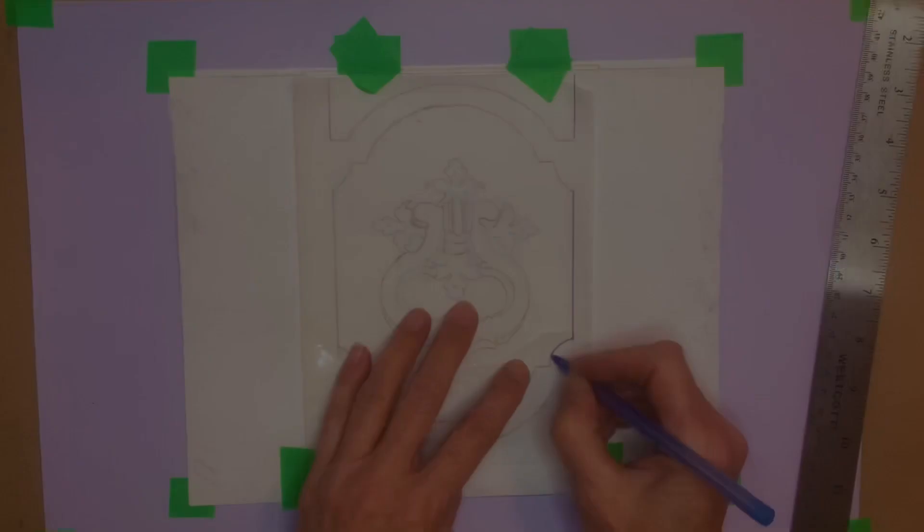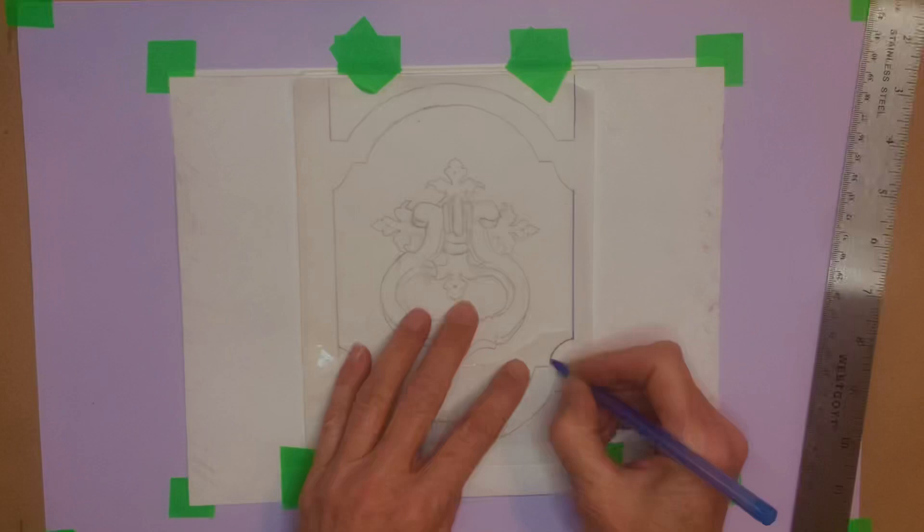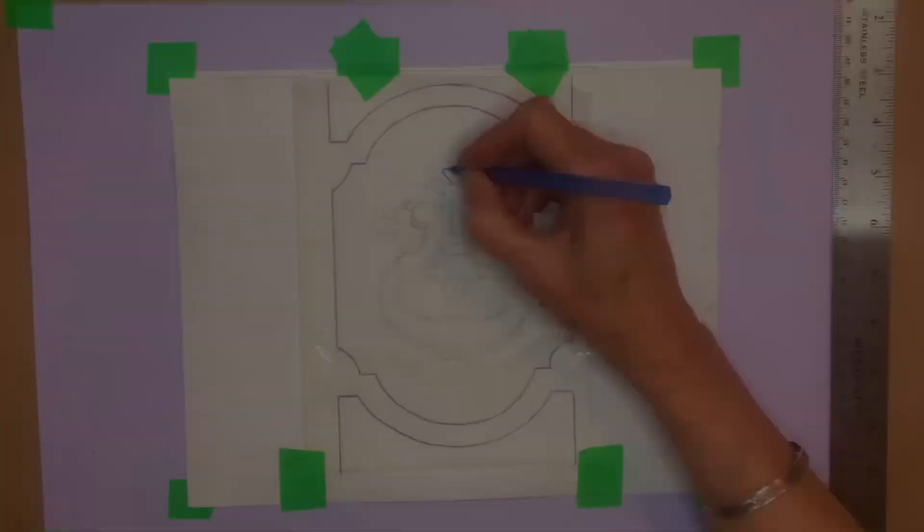The graphite paper can be saved and used over and over and can be re-coated with pencil as needed along the way.